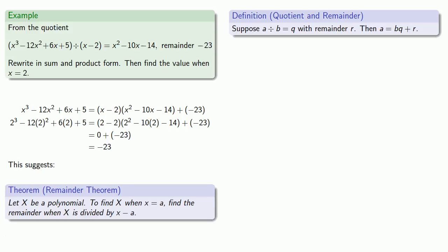Let capital X be any polynomial. To find capital X when X is equal to A, find the remainder when capital X is divided by X minus A.